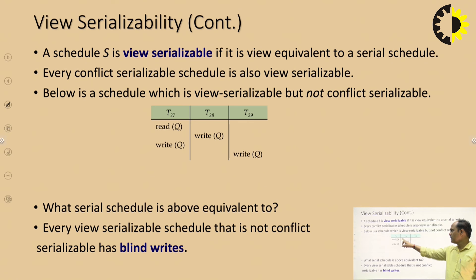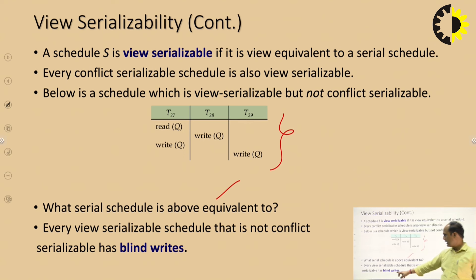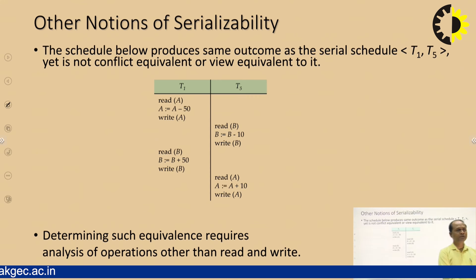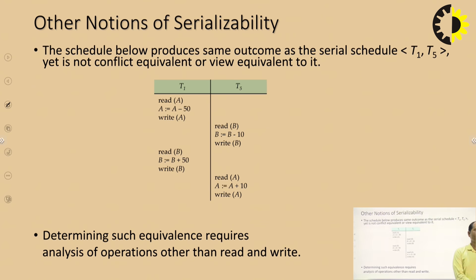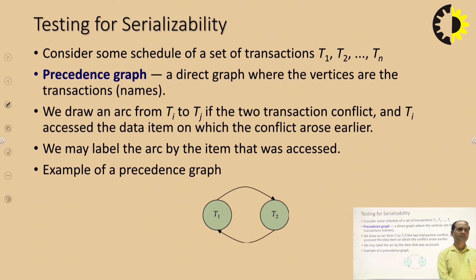Examples T27, T28, and T29 illustrate view serializable schedules. We can find the equivalent serial schedule. Every view serializable schedule that is not conflict serializable has blind writes. For the purpose of testing serializability, we can draw the precedence graph of the transactions and easily calculate whether it is conflict serializable or not.